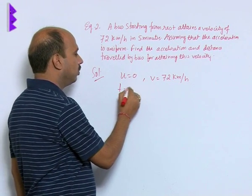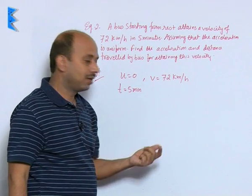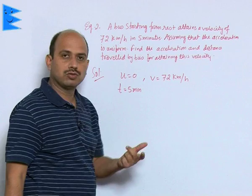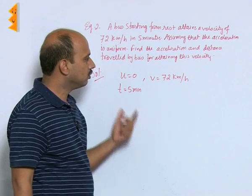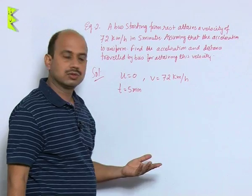Time t is given to you 5 minutes. As I have told you, SI unit of time is second, SI unit of velocity is meter per second, so better we can convert all these things in SI unit.